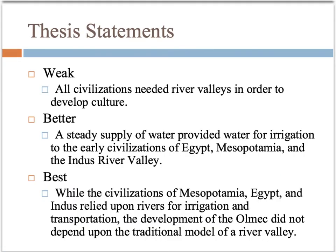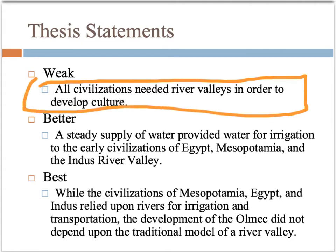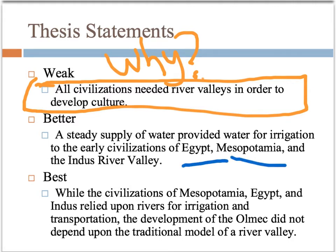Looking at it first, an example of a weak thesis statement would be what we call parroting the prompt: 'All civilizations need river valleys in order to develop culture.' That's basically what the prompt said — you're not answering the why or how that happened. A slightly better example would be: 'A steady supply of water provided water for irrigation for the early civilizations of Egypt, Mesopotamia, and Indus River Valley.' At least you're getting specific examples and the connection to irrigation, but the question is not fully answered because you're not talking about how irrigation led to the development of civilization.